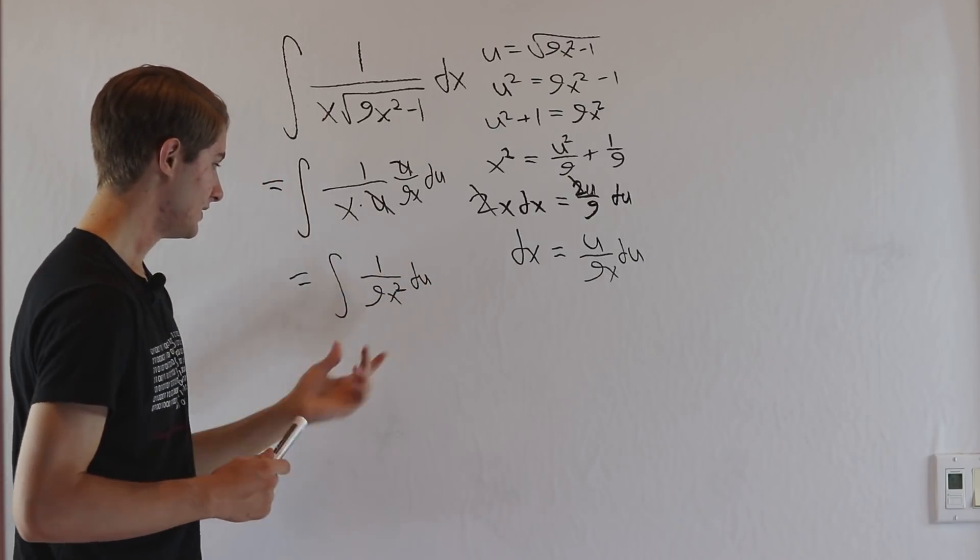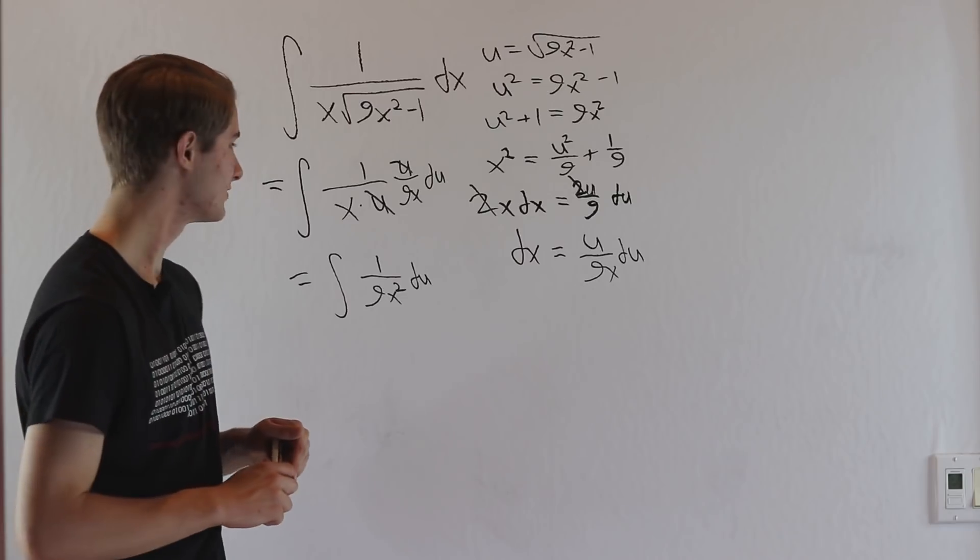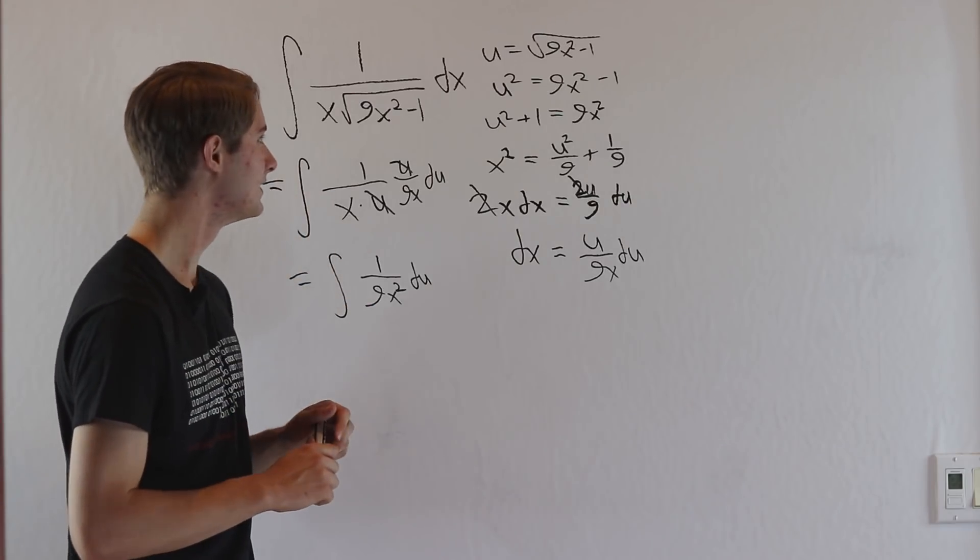Wait a second. This entire integral is in terms of x, but we're supposed to integrate with respect to u. Do we need to start over? Did we mess something up here? Not yet.